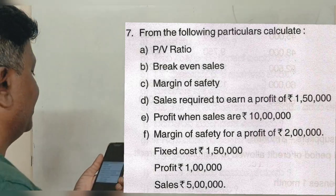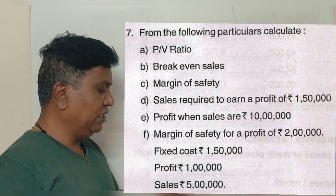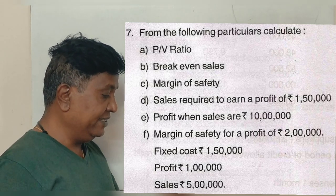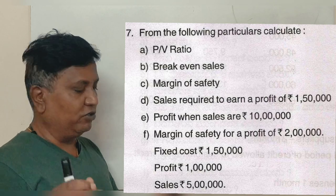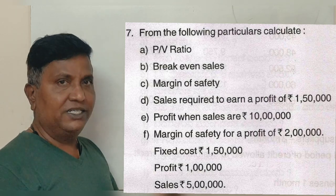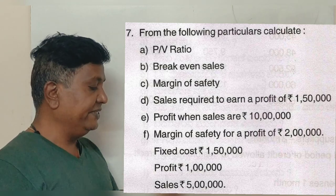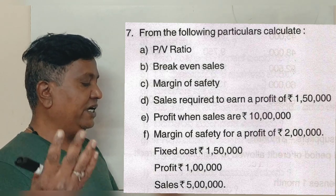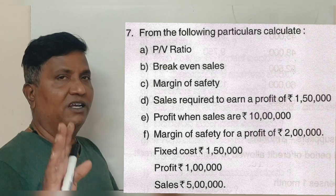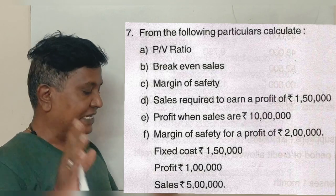This is a 2016 question paper, 14 marks, 1 question. There are 6 questions to answer from the following particulars: calculate PV ratio, break-even point in sales, margin of safety, sales required to earn a profit of 1 lakh 50, profit when sales are 10 lakh rupees, and margin of safety for a profit of 2 lakhs.